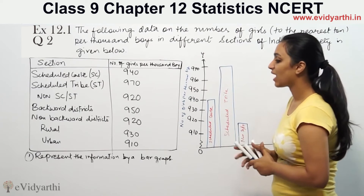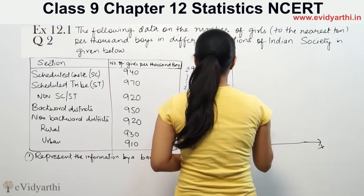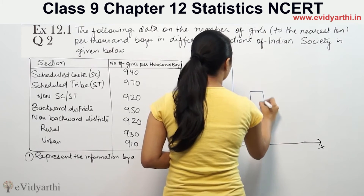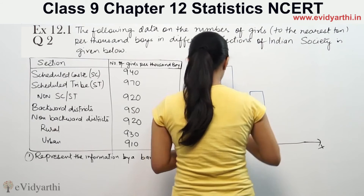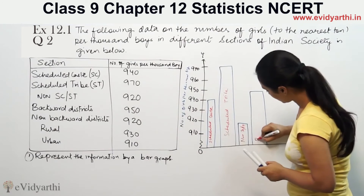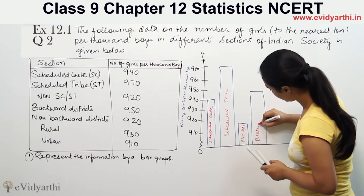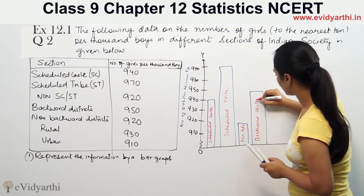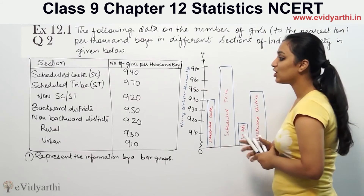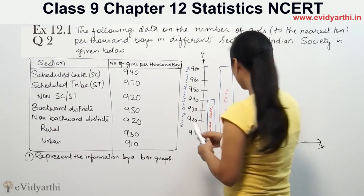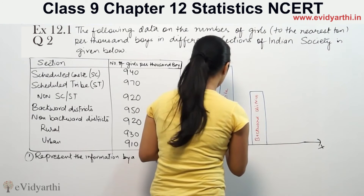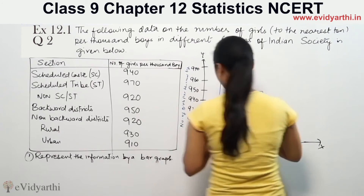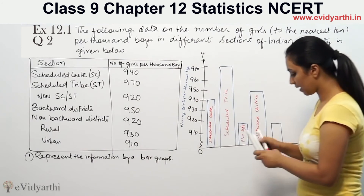Then backward districts is 950, so the bar is drawn at 950. This is backward districts. Then non-backward districts is 920, and the bar is drawn at 920. This is non-backward districts.